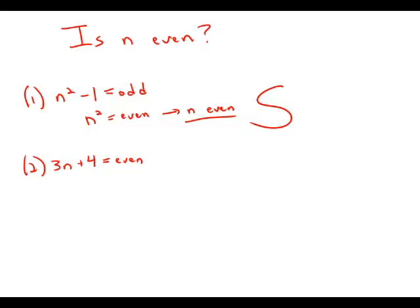Statement number two tells us that three n plus four is even. Well, if we subtract four from an even number we get another even number, so that means that three n must be even.